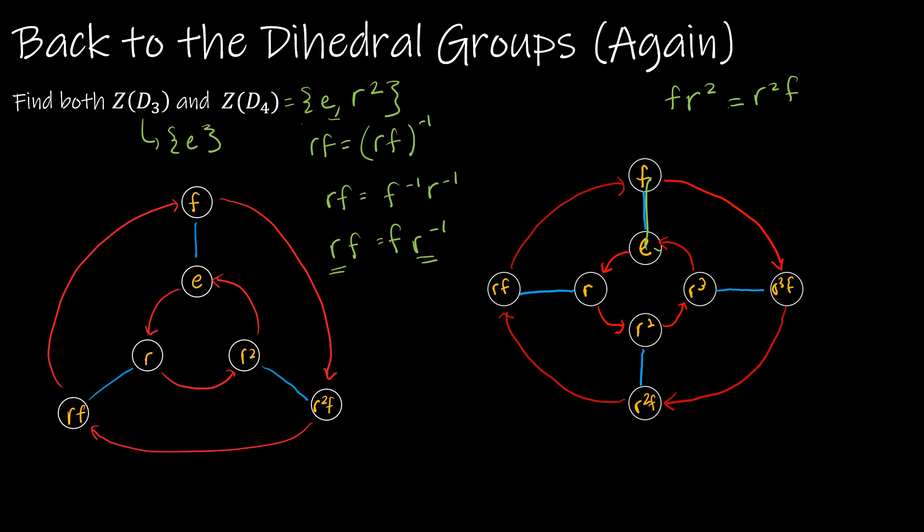So for D3, the center of D3, we have only the identity, and the center of D4, we have the identity and R squared.